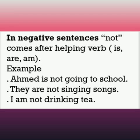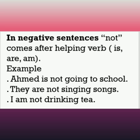In negative sentences, 'not' comes after the helping verb. For example: 'Ahmed is not going to school.' Here 'is' is the helping verb, and 'not' comes after it. In interrogative sentences, the helping verb comes before the subject. For example: 'Are you sleeping?', 'Is he going to market?', 'Am I drinking juice?'